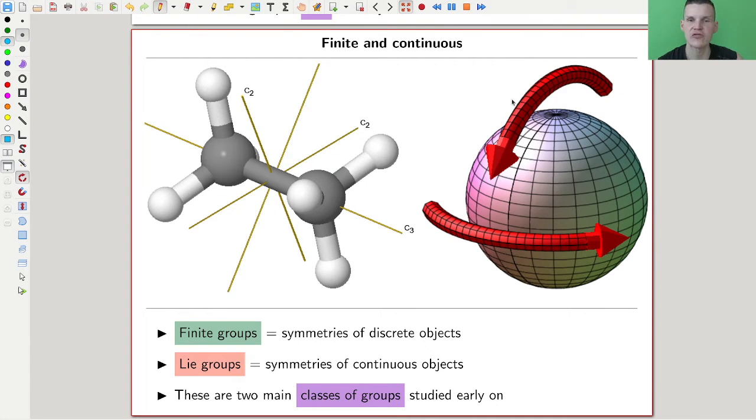And we call them finite symmetries and continuous symmetries. So finite symmetries is what you think they are, like symmetries of a molecule or something, where you have a finite number of rotations, you have a three-fold rotation and a symmetry, and maybe you have a flip symmetry in this molecule as well. But there are certainly finitely many symmetry axes of that molecule. So finite groups is the study of symmetries of discrete objects.